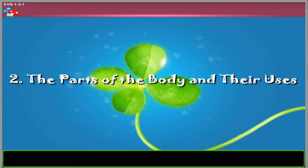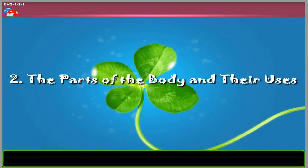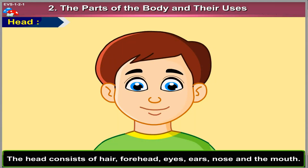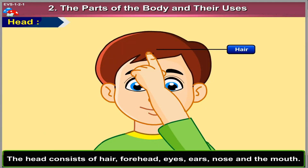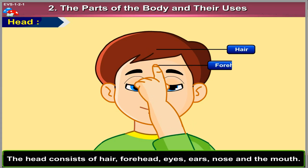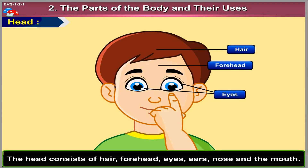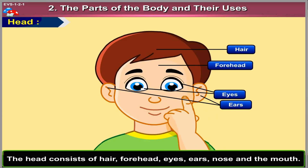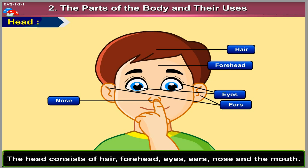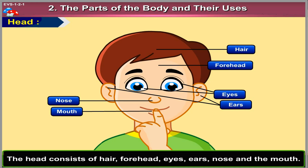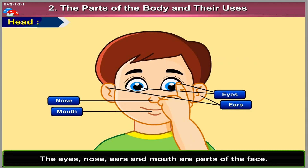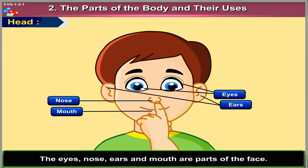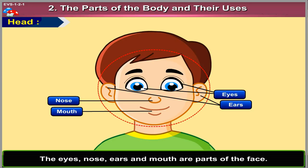Chapter 2: The Parts of the Body and Their Uses. The head consists of hair, forehead, eyes, ears, nose, and the mouth. The eyes, nose, ears, and mouth are parts of the face.